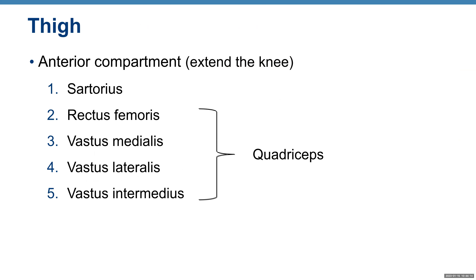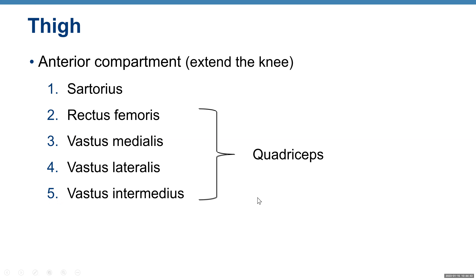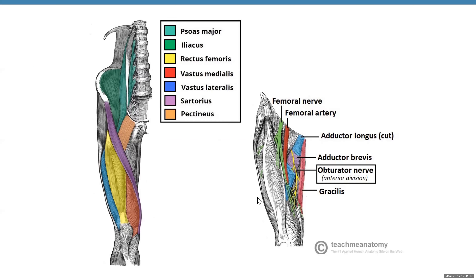Now we're moving to the thigh. The anterior compartment extends the knee and includes the sartorius muscle and the quadriceps group. Quadriceps means four heads — it's actually four muscles: rectus femoris, vastus medialis, vastus lateralis, and vastus intermedius. Here is the sartorius muscle, the one that crosses your thigh, and this is pectineus.